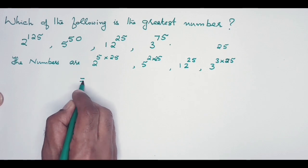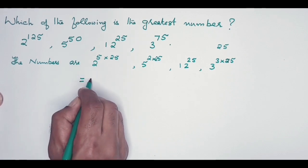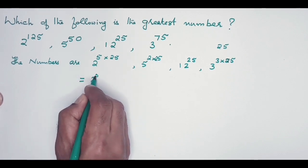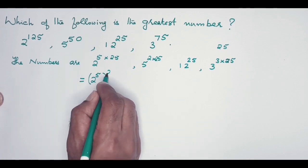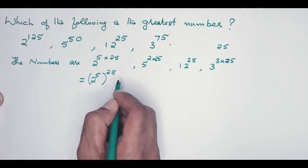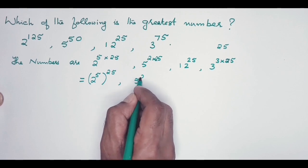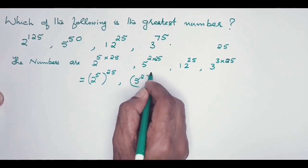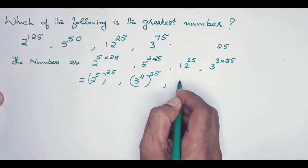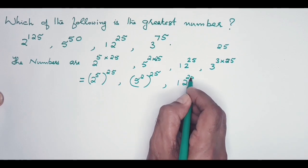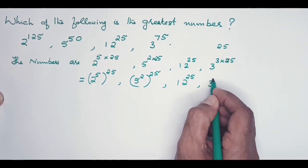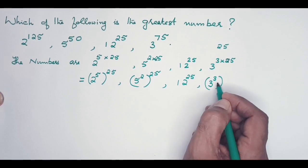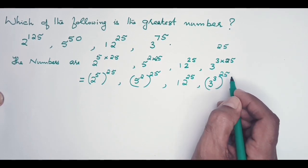Now these numbers: the first one, 2 to the power of 5, the whole to the power of 25. The next one, 5 squared to the power of 25. Third one, I'm writing just 12 to the power of 25. And the last one, 3 to the power of 3 to the power of 25.